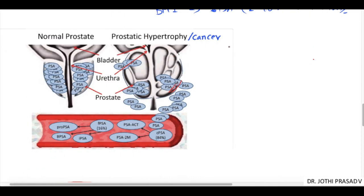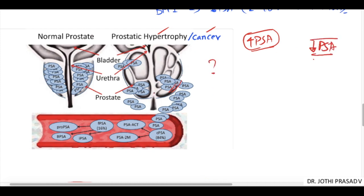One interesting point to note is that the elevation in PSA in pathological conditions — whether BPH or malignancy — is not due to increased production by malignant cells. In fact, these cells produce decreased amounts of PSA. The elevation is due to architectural distortion causing a leaky basement membrane, allowing already-produced PSA to leak into the blood.